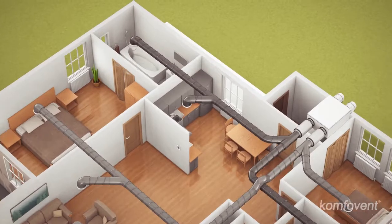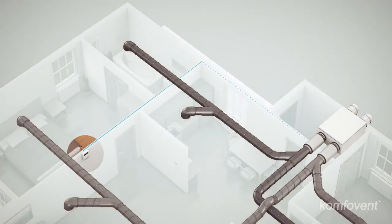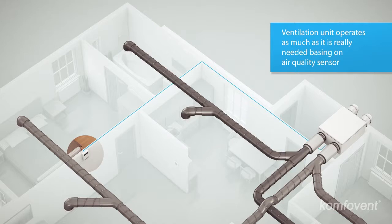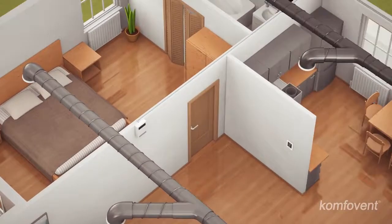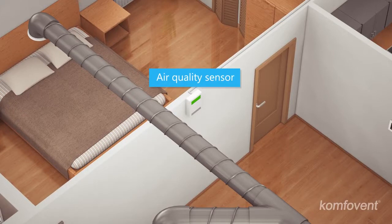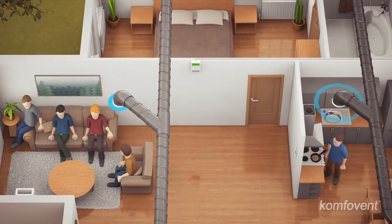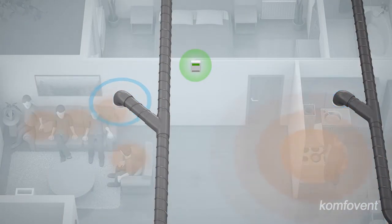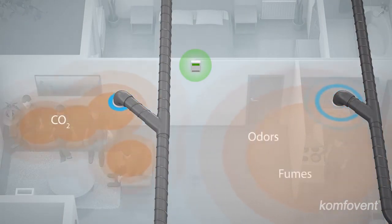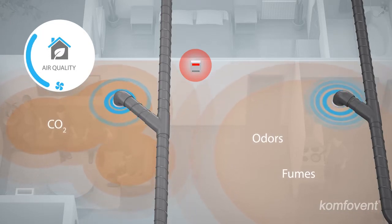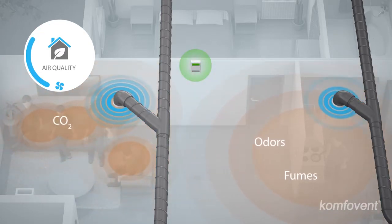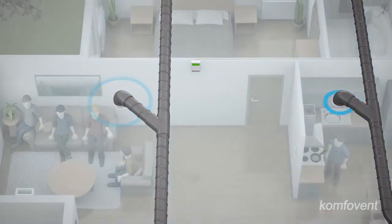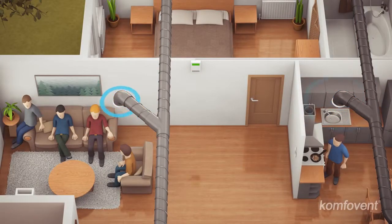With air quality sensors, the air handling unit operates as long as necessary in order to maintain the required air quality. No need to worry about weekly schedules or adjustment of ventilation intensity — Smart Control will do it for you. An air quality sensor responds to the number of people in the rooms or to any fumes and odors, maintaining a comfortable and healthy environment with high accuracy. The sensor sends signals, and the ventilation automation effectively controls the air flow. With fresh air, the ventilation intensity is reduced or turned off, thus saving energy.